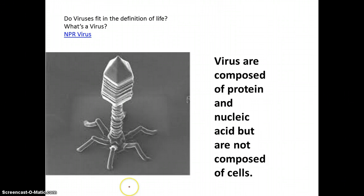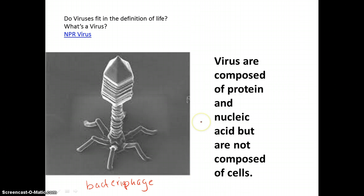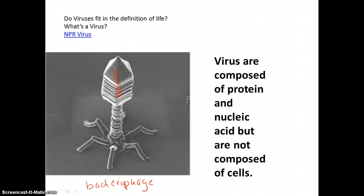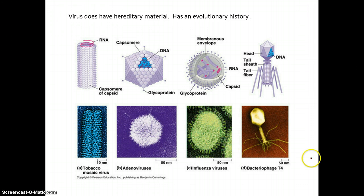Now, when you look at viruses, here's an electron micrograph of a bacteriophage. A bacteriophage is a virus that only attacks bacteria. So you can imagine how small this virus is. Now, viruses are just composed of protein and nucleic acid. The outside structure is protein, and inside will be the hereditary material — either DNA or RNA. So viruses are not composed of cells, but only protein and nucleic acid.